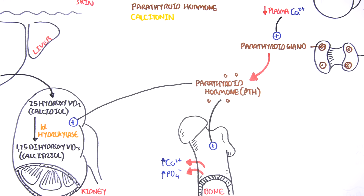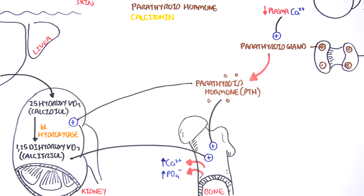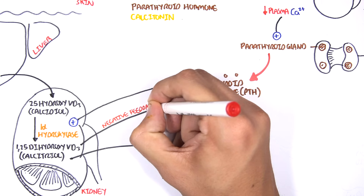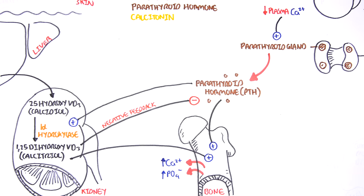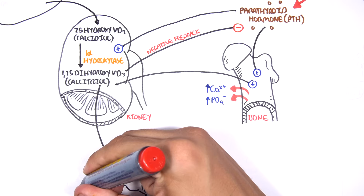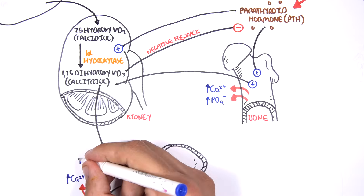Calcitriol targets a few things. Firstly, it stimulates the bone to break down, increasing calcium and phosphate minerals in the blood. Calcitriol also has a negative feedback on the parathyroid gland — it inhibits it, because if we have sufficient calcitriol, we don't need as much parathyroid hormone. Calcitriol also targets the GIT, stimulating it to increase calcium and phosphate absorption.